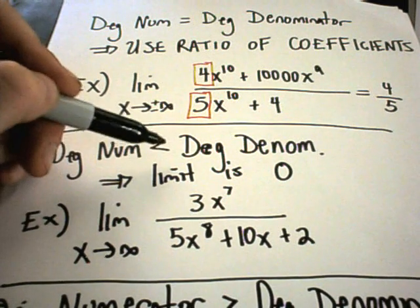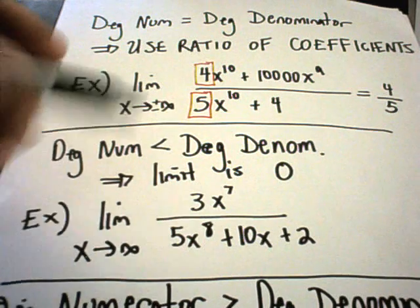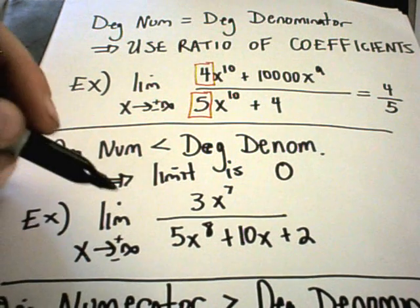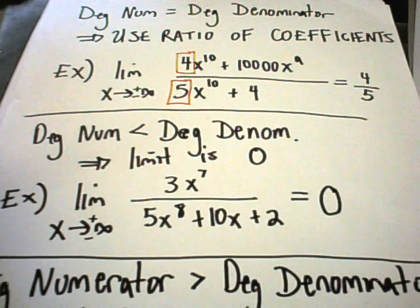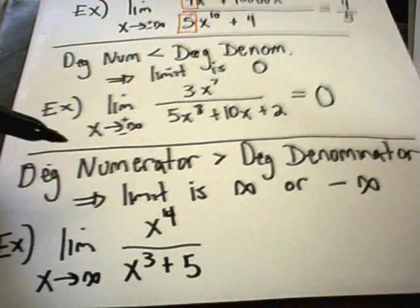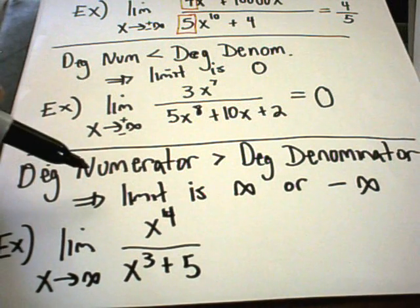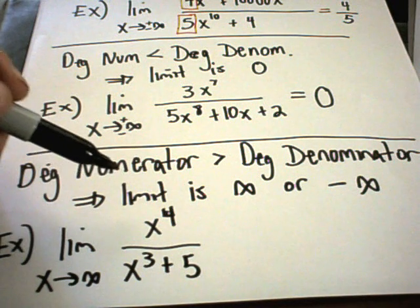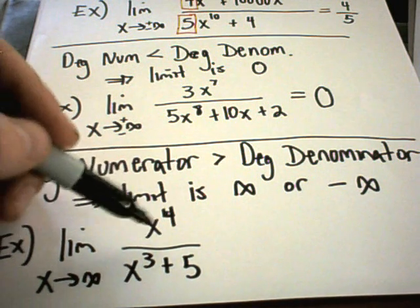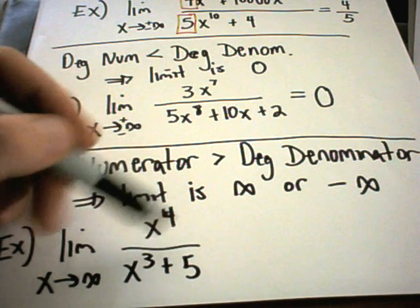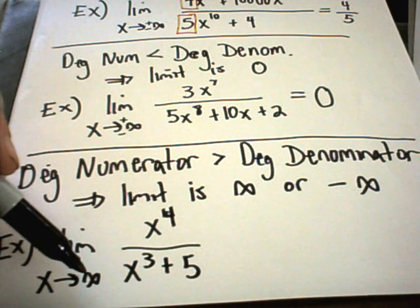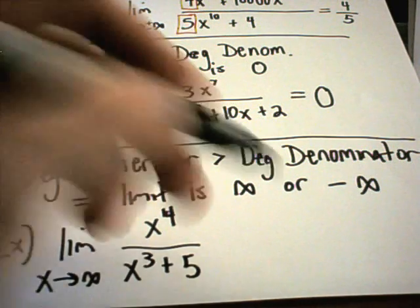The next case: if the degree of the numerator is strictly smaller than the degree of the denominator, whether you're going to positive infinity or negative infinity, the limit is always equal to 0. Last but not least, the only other case is if the degree of the numerator is greater than the degree of the denominator — in that case your limit works out to either positive or negative infinity, and it depends on whether the power is even or odd and whether you're going to positive or negative infinity.